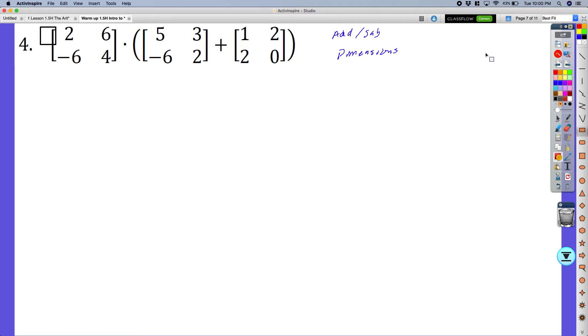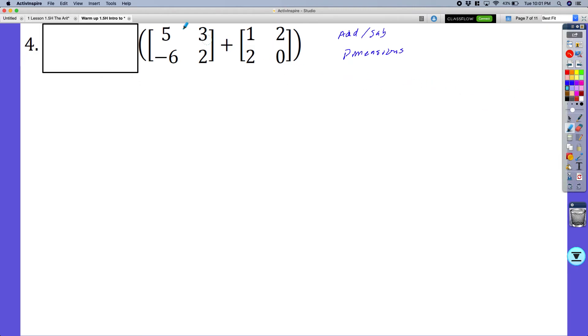So I'm changing the problem so it looks like this. And when I add and subtract these, what you basically do is you take the corresponding spots and you complete the operation. So if I go ahead and just match up my corresponding values. And now I'm going to match up my corresponding values. 5 plus 1 is 6. 3 plus 2 is 5. Negative 6 plus 2 is negative 4. And 2 plus 0 is 2.